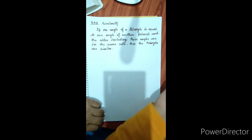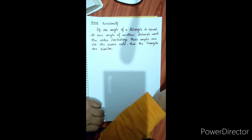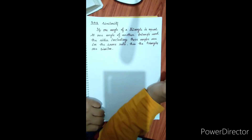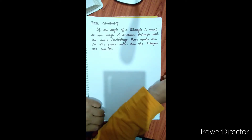Hello students, this is Class 10. We are going to see the theorem SAS similarity. If one angle of a triangle is equal to one angle of another triangle and the sides including these angles are in the same ratio, then the triangles are similar. So two triangles satisfying this condition will be similar by SAS similarity.